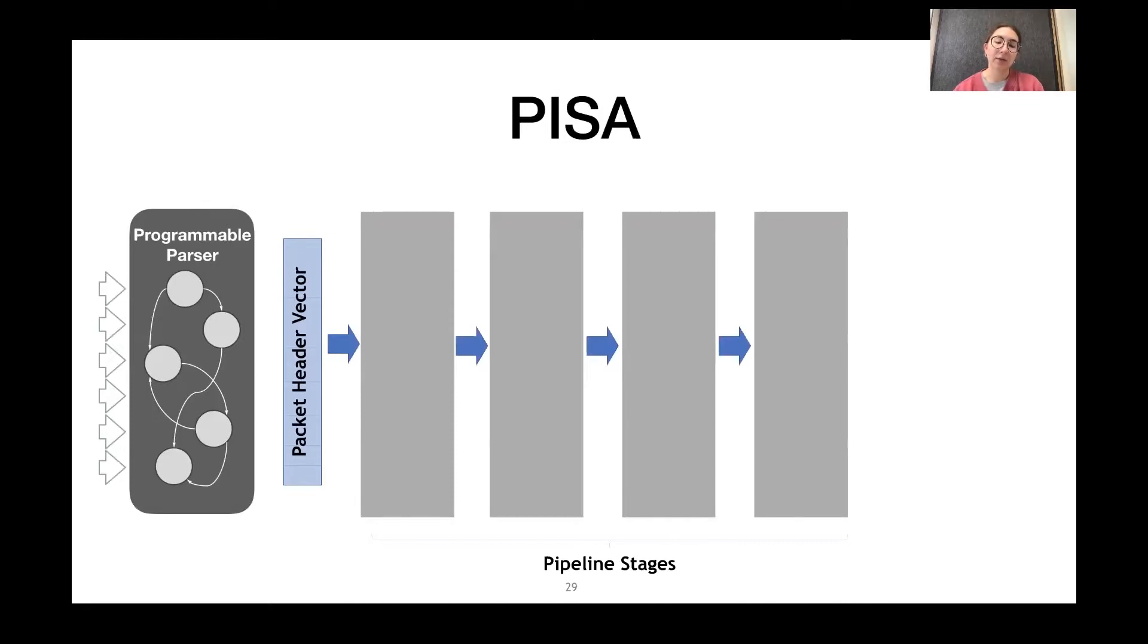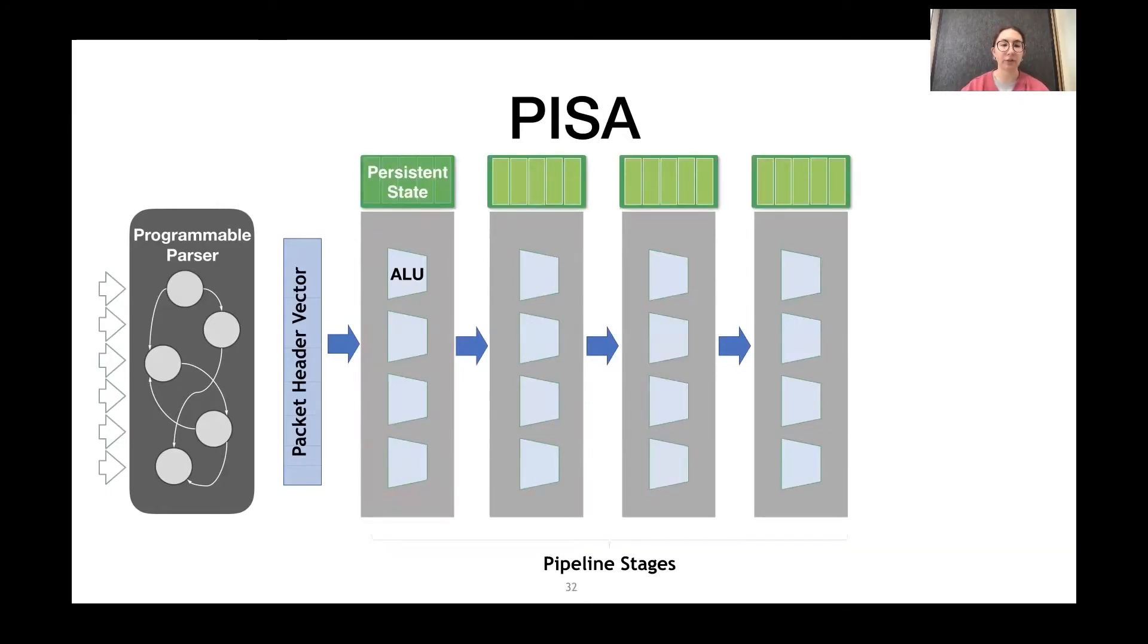The packet then enters the processing pipeline, which consists of a series of stages. And each stage contains a fixed set of resources. This includes ALUs, and these are used to perform actions in each stage. And the actions performed in a single stage have to happen concurrently. So, two dependent actions have to go in two separate stages. Each stage also has a small number of registers that serve as persistent state.